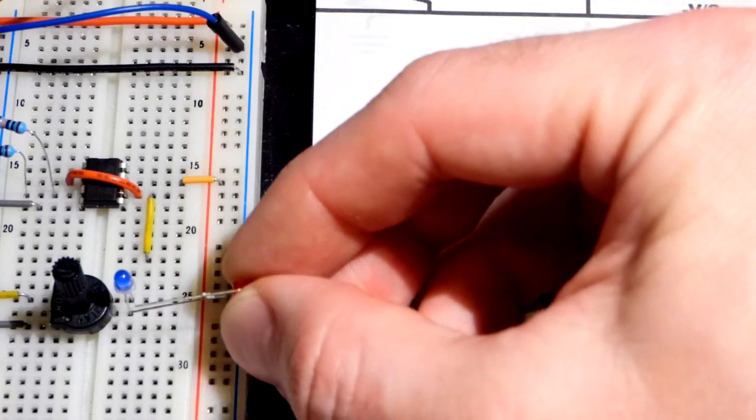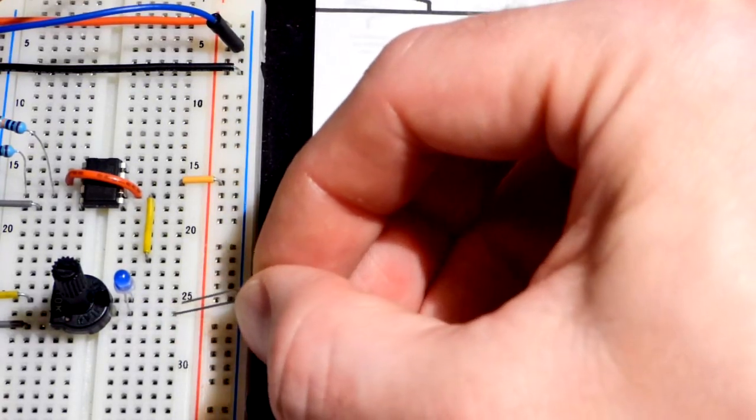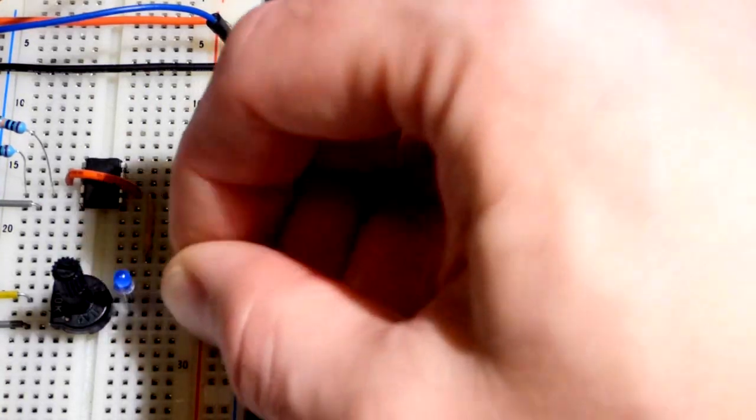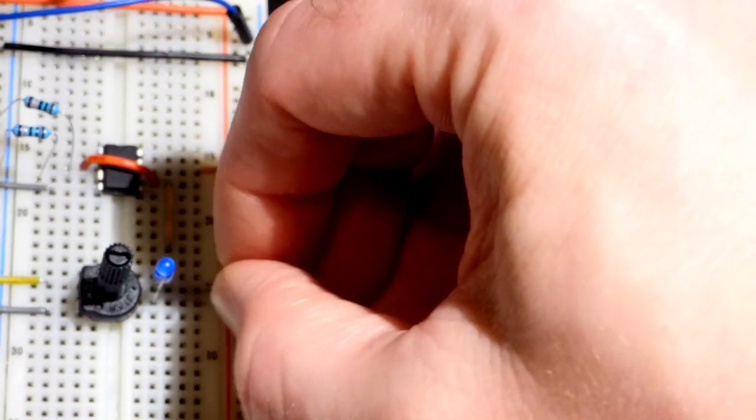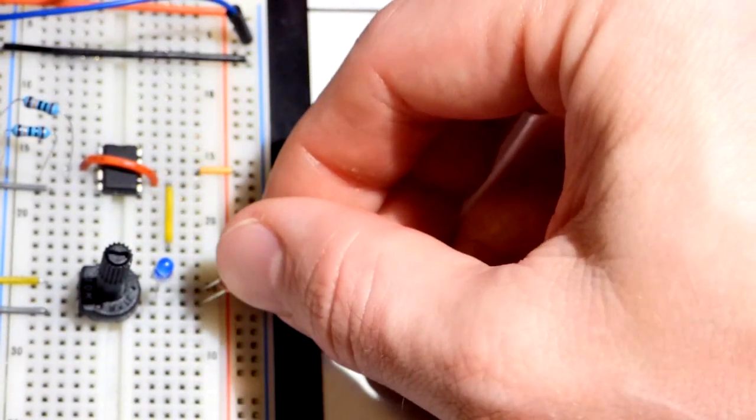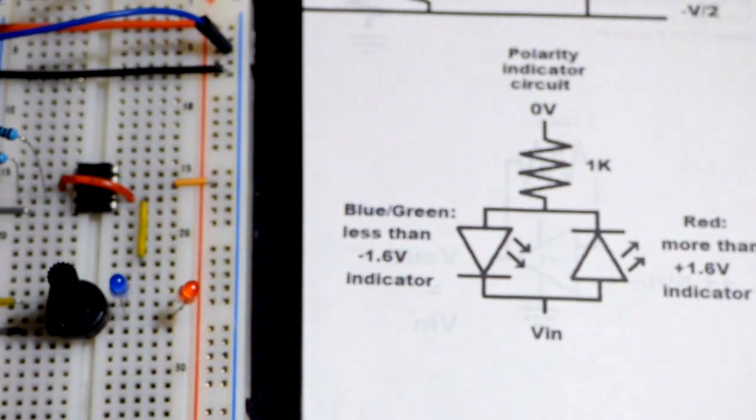The long lead, the anode, we want connected to where the output of the trim pot is which is the input for our circuit. I might as well space them out make it a little easier to see. Long lead, the anode, is down lower, short lead, the cathode, is up higher.